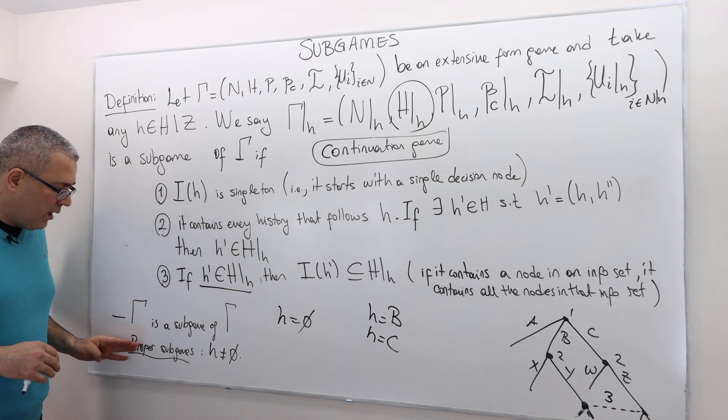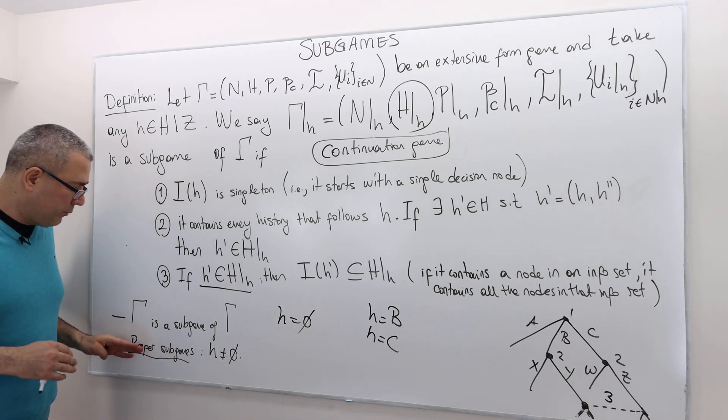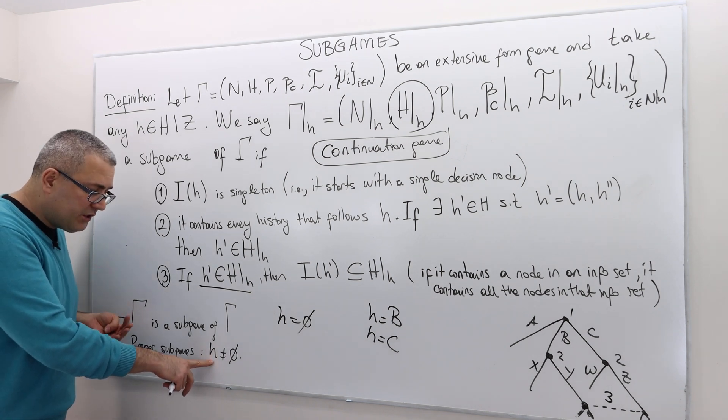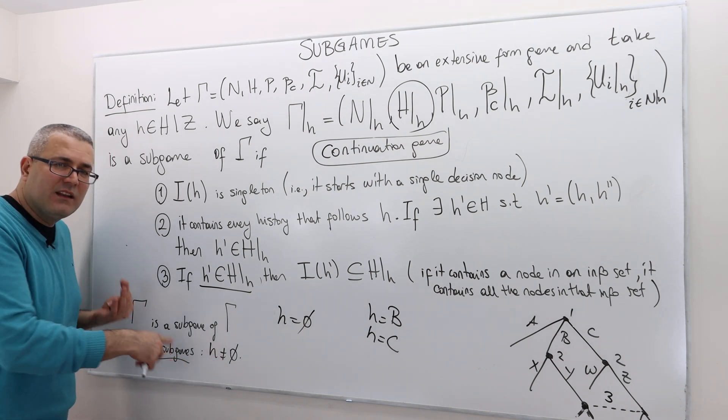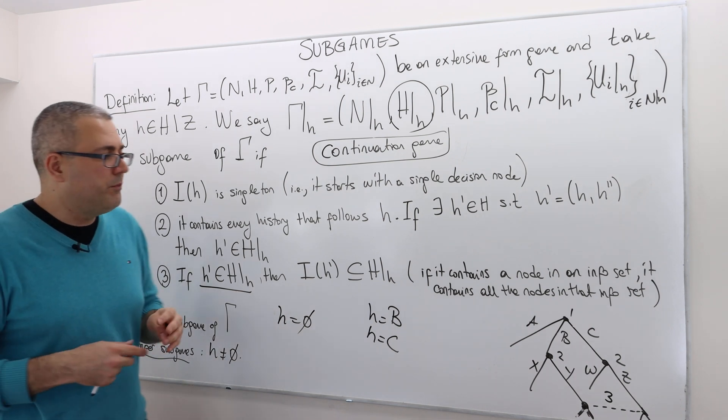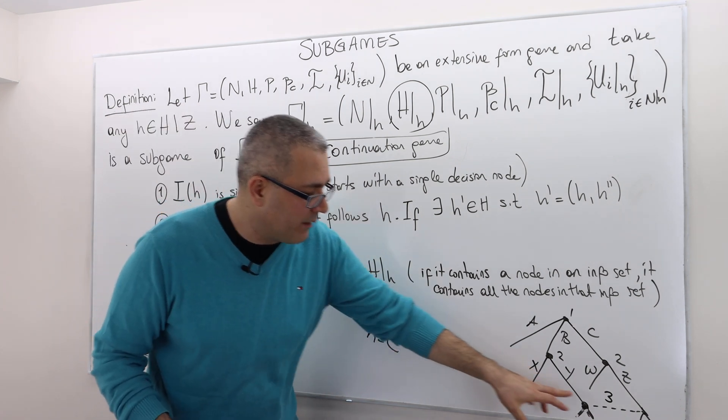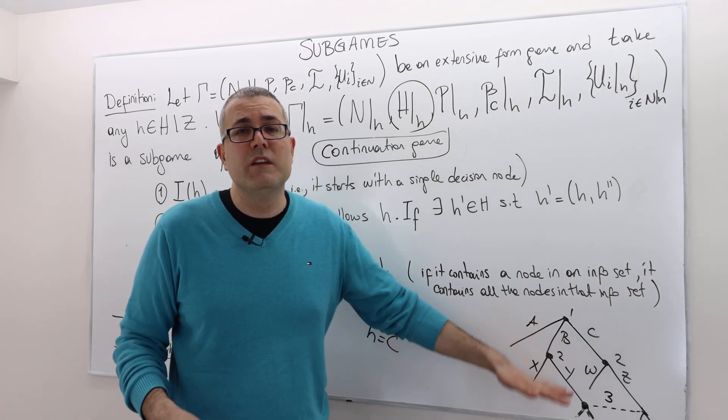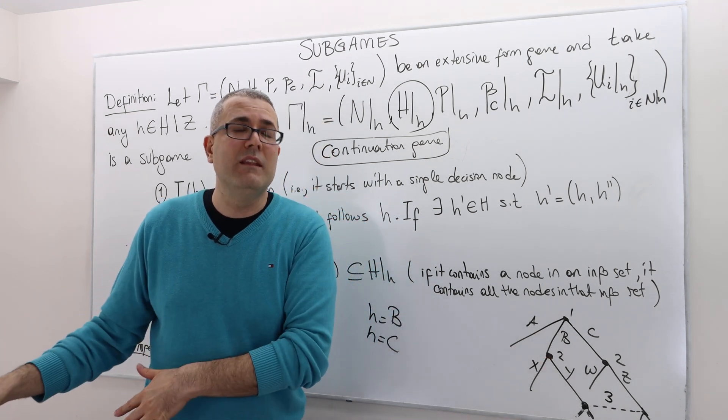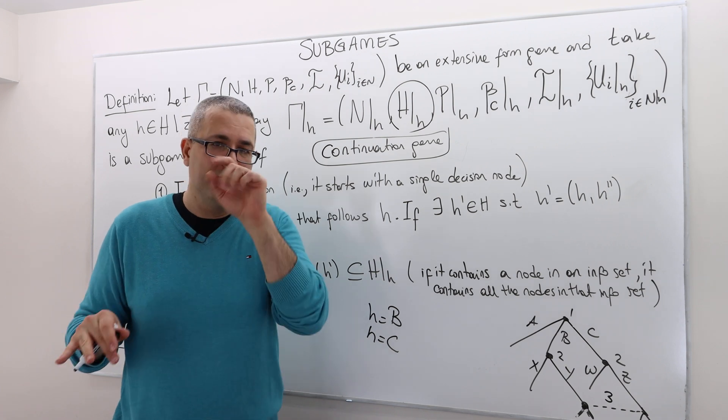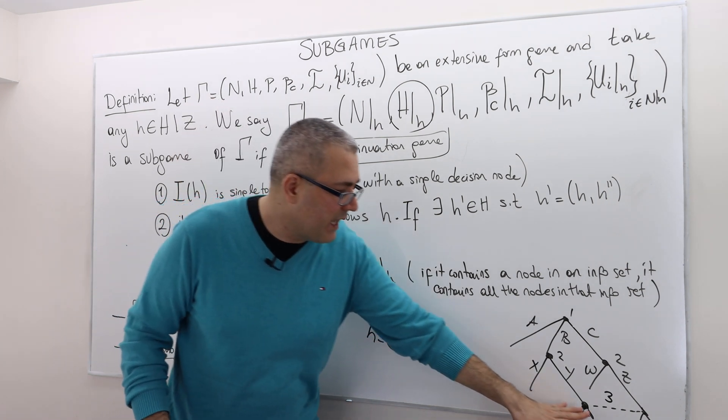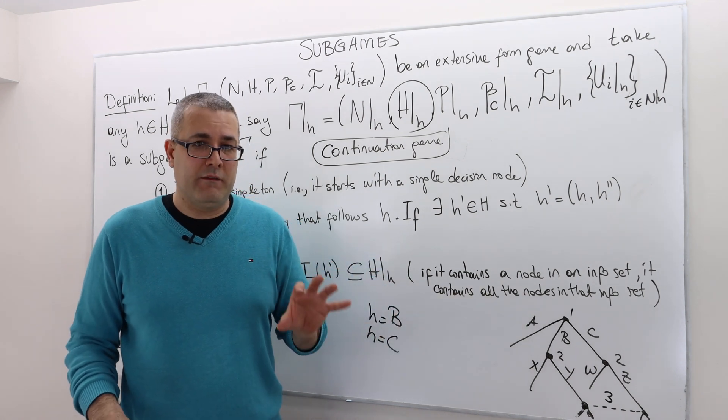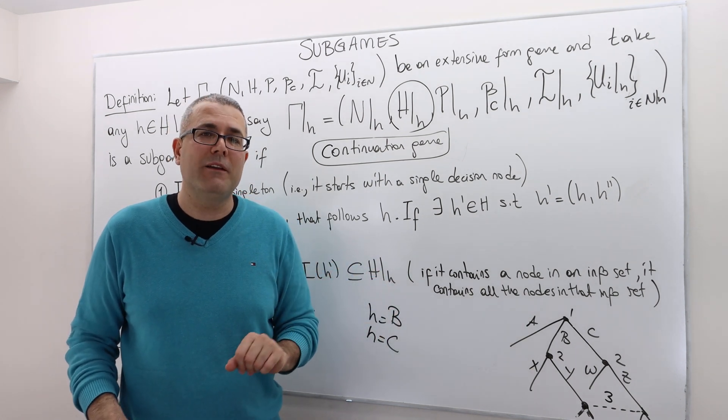We say, what about proper subgames? Well, proper subgames are subgames which follow histories that are other than the null history. Which means, in this game, again, player three makes a move and then the game is over. Maybe, if you continue a game, maybe in the future there might be some subgames. But if the game over after the third player's actions, it means this game doesn't have a proper subgame.